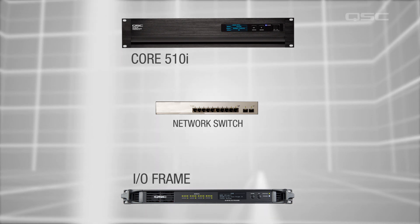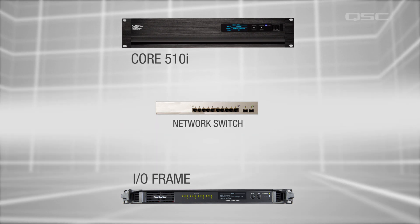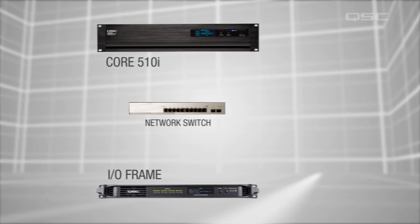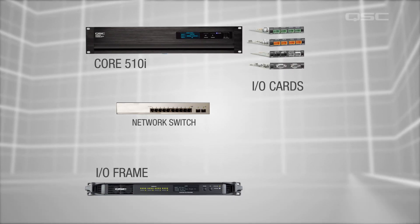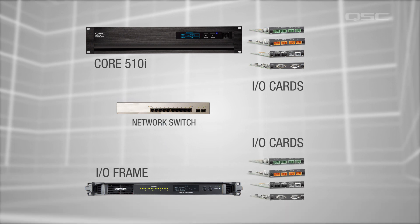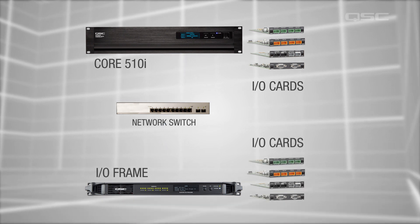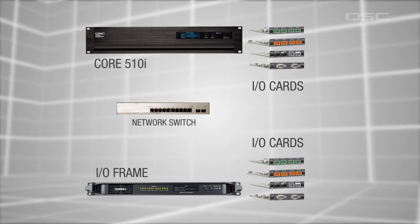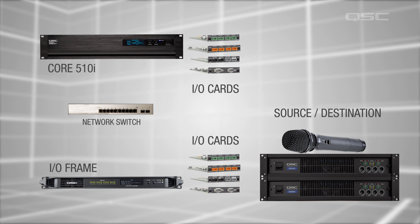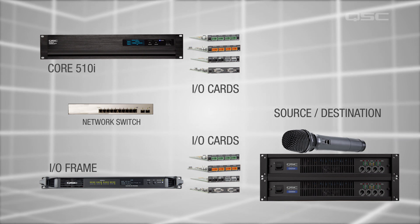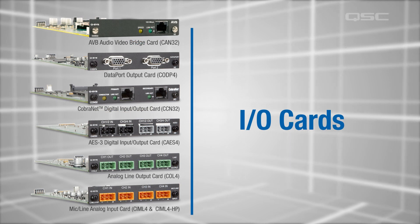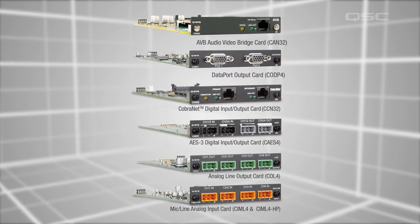After the core processes the audio, it transports the audio to an appropriate output, which might be a local connection or I.O. card on the core itself or another networked I.O. device. Regardless of where the audio leaves Q-SYS, that audio is then converted back to analog and delivered to the amplifier. Q-SYS I.O. devices are intended to be physically located close to the signal source or destination. The different types of I.O. cards will be covered later in this course.